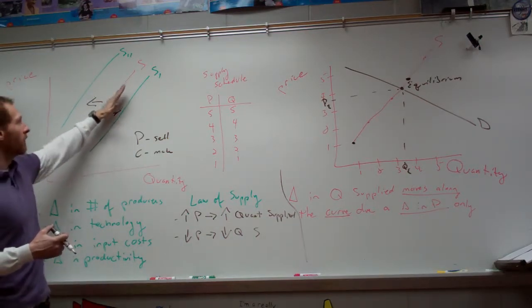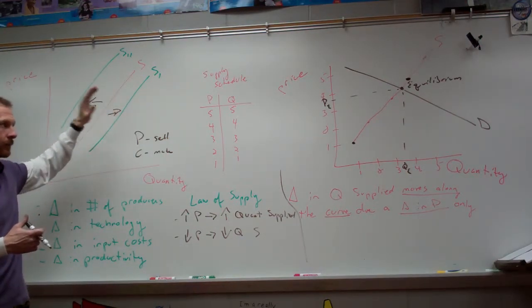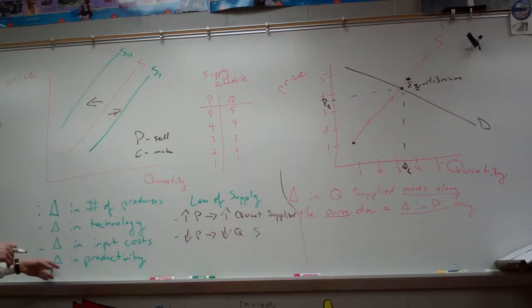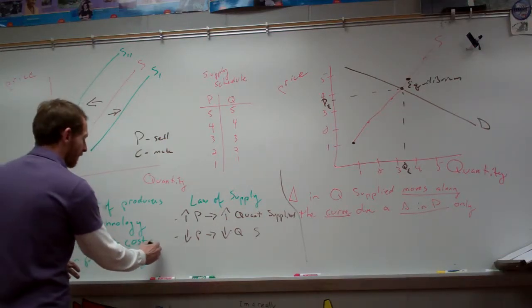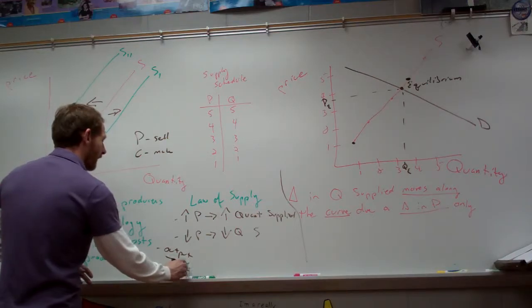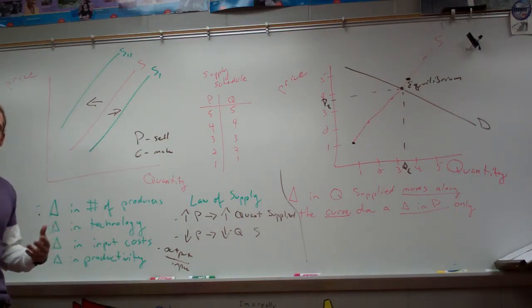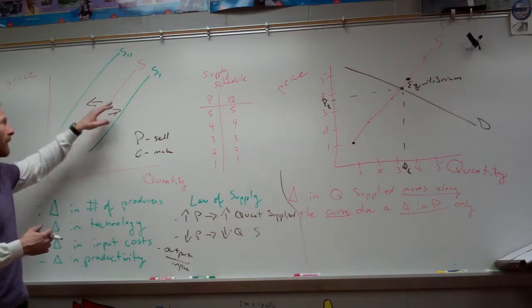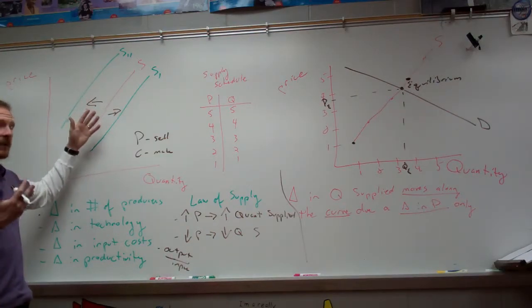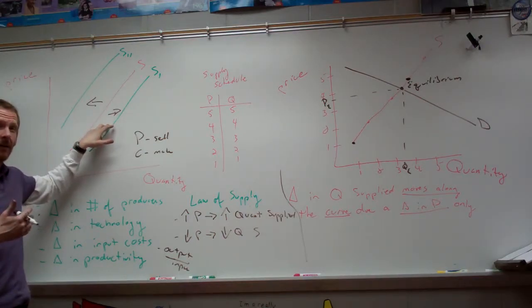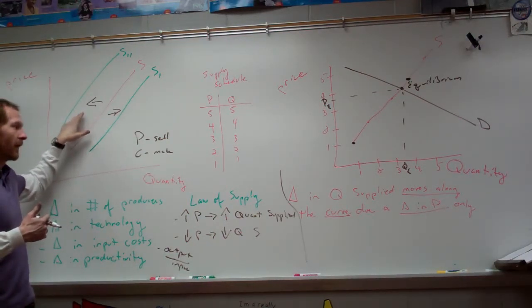And so it doesn't move along the curve, it shifts. So that would be a change in input cost. Changes in productivity. Productivity, its formula is outputs over inputs. So if we become more productive or more efficient, then we can supply at a higher level. So if the company becomes less efficient, then they would supply at a lower level, so it would shift to the left. Better productivity, better efficiency means shift to the right. Less efficiency or less productivity would be a shift to the left.